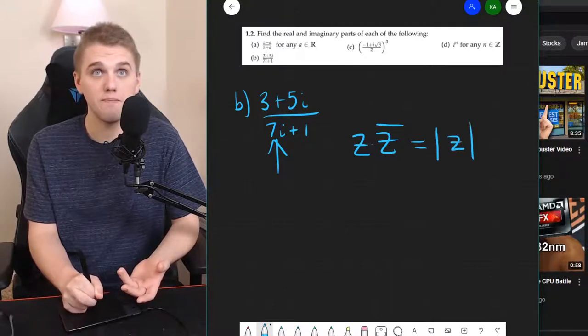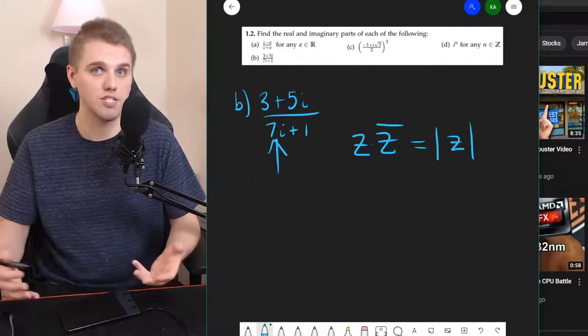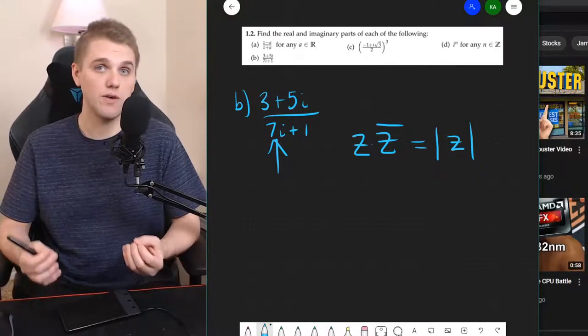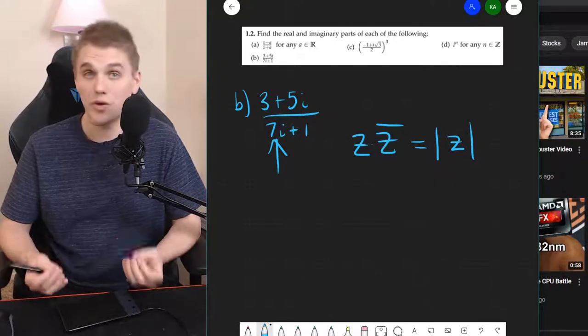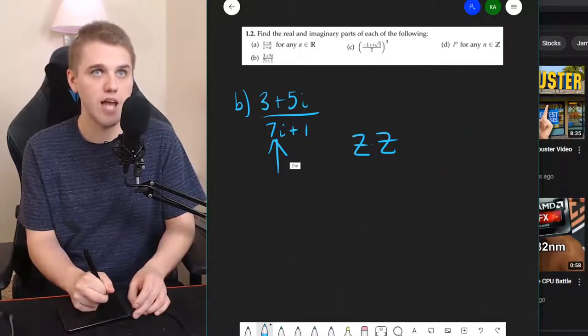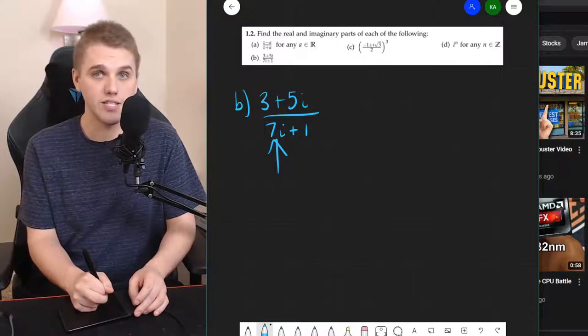By definition this is the magnitude of a complex number. This is the absolute value of a complex number. And the output of any absolute value function is a real number. So the strategy now is to multiply the denominator by its complex conjugate.